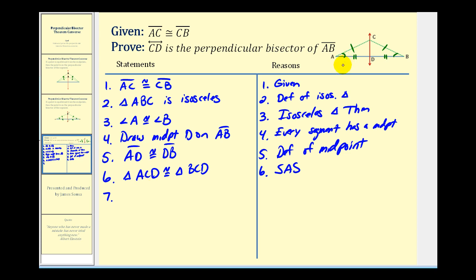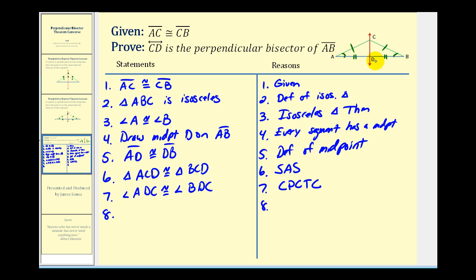So now we have enough information to state that triangle ACD is congruent to triangle BCD by side-angle-side. Now that we know these two triangles are congruent, we know that angle ADC and angle BDC would be congruent. The reason is corresponding parts of congruent triangles are congruent. Notice these two angles also form a linear pair and are therefore supplementary. By the congruent supplementary angles theorem, the measure of angle ADC must equal the measure of angle BDC, which must equal 90 degrees.